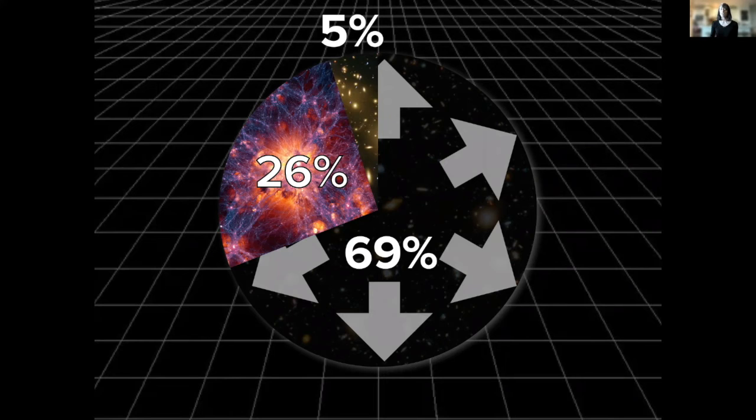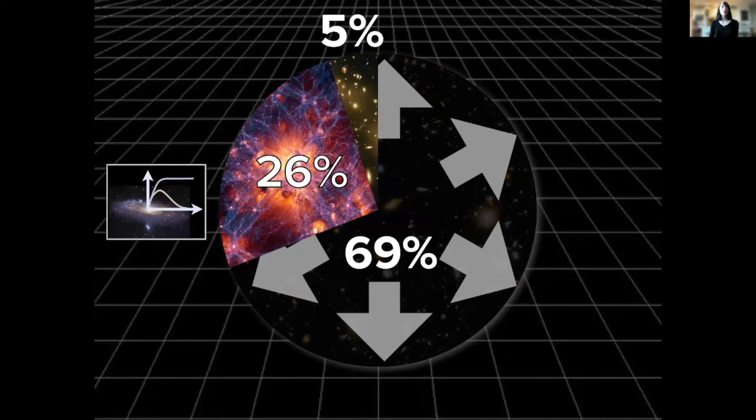Obviously it has large parts which are completely unknown. So let's recap. We have 26 percent, which is made up of dark matter.